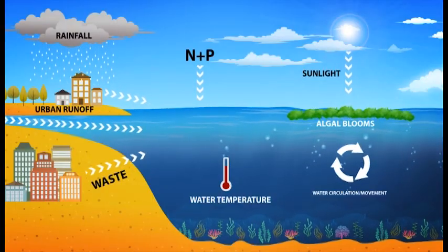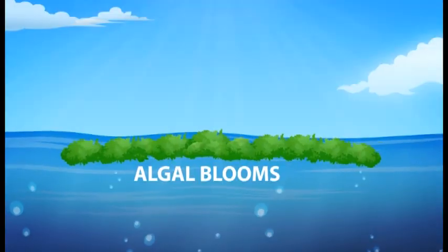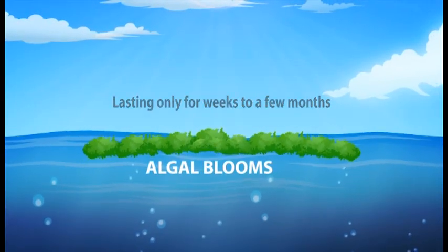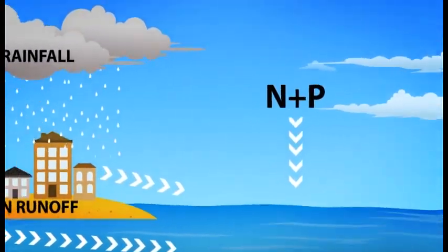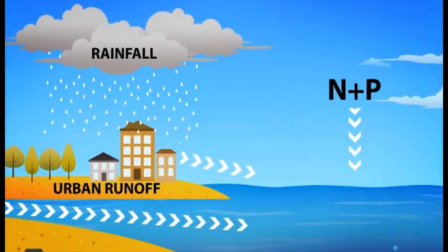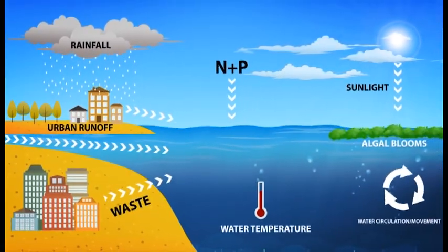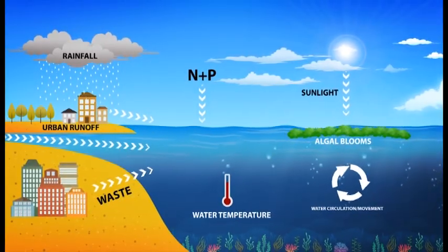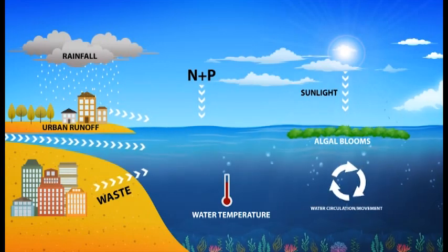What causes algal blooms? Algal blooms occur when there is a combination of environmental conditions favorable to sustain the growth and survival of algae. The recurrence is relatively short-lived, lasting only weeks to a few months in a particular area and difficult to predict. One major requirement is the overabundance of nutrients — nitrogen and phosphorus — in water. Nutrient-replete waters may come from rainfall, upwelling areas, urban runoffs, and wastewater outflows. When nutrients increase, the right combination of water temperature, sunlight, salinity, and water circulation can trigger an algal bloom. Freshwater HABs are influenced by turbidity, whereas marine HABs are enhanced by tidal currents and climate-driven wind patterns.